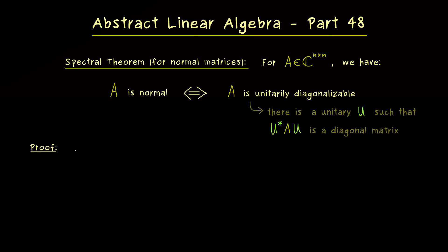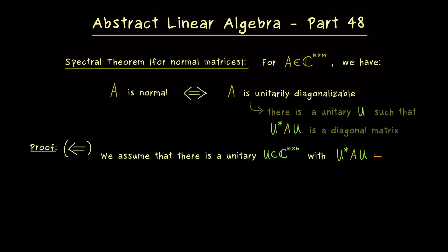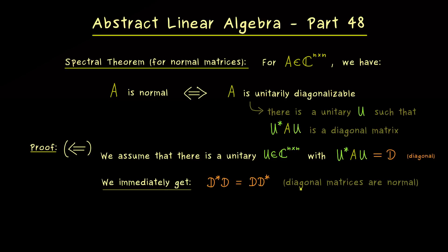Let's first formulate the simpler direction, which means we go from right to left. We already assume that we can find such a unitary to transform A into diagonal form, and we write D for our diagonal matrix. This diagonal matrix is clearly normal as well — D* is a diagonal matrix, and D* D equals D D*, since everything happens on the diagonal. Diagonal matrices always commute simply because we only deal with complex numbers on the diagonal, which have the commutative property.